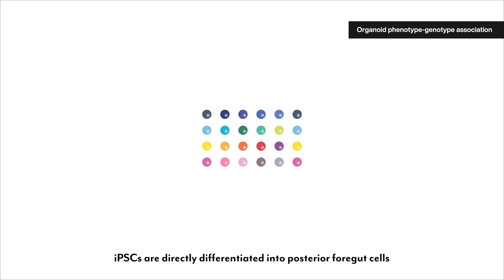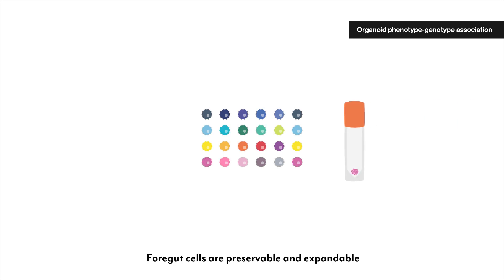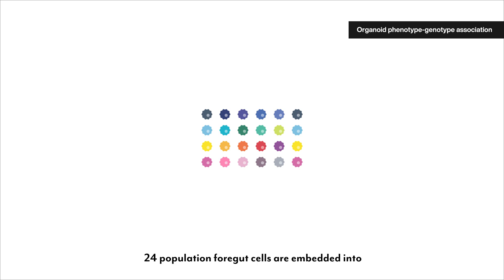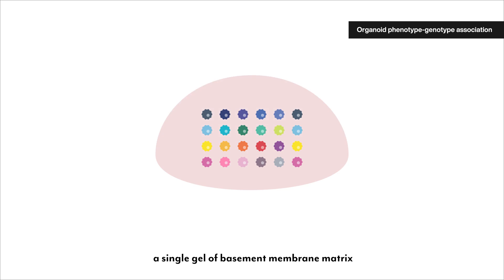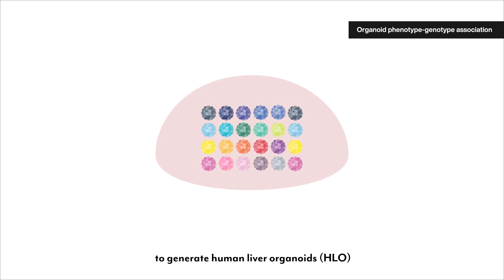IPS cells are directly differentiated into posterior foregut cells. Foregut cells are preservable and expandable. 24 population foregut cells are embedded into a single gel of basement membrane matrix to generate human liver organoids.